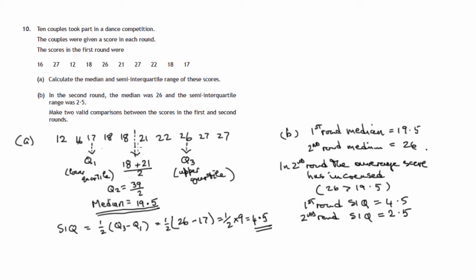Now, semi-interquartile range is a measure of how spread out these data values are around the median. So they're less spread out in the second round, which means they're more consistent.